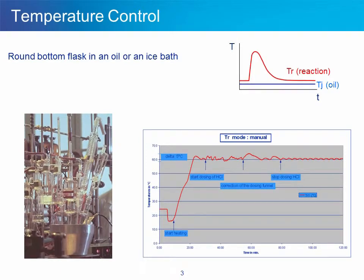Let's start with a quick overview of the way many of us still run chemistry in the lab, using a round bottom flask and an oil bath. The temperature of the bath, whether oil or ice, is mostly kept constant. If an exothermic event occurs due to a chemical reaction, the temperature of the reaction mixture will raise. There is, however, a major limitation with such a setup.